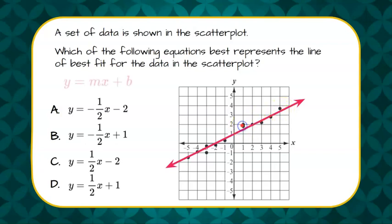So first I'm going to identify that we are going to write our line of fit as a slope-intercept form y equals mx plus b. Our slope being m, our y-intercept being b.